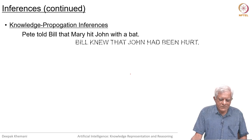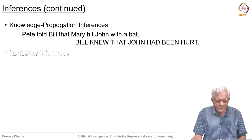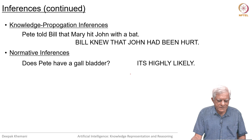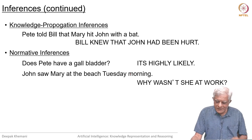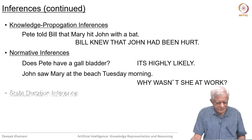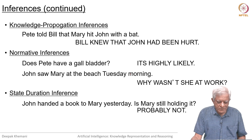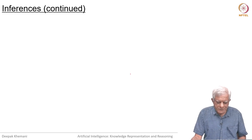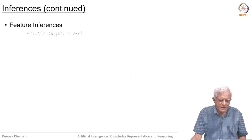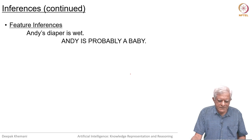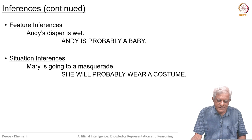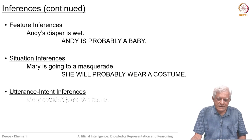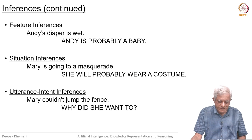Knowledge propagation: Pete told Bill that Mary hit John with a bat — Bill knew that John had been hurt. Normative inferences: Does Pete have a gall bladder? It is highly likely — that is a normal thing to happen. John saw Mary at the beach Tuesday morning — why wasn't she at work? State duration inferences: John handed a book to Mary yesterday — is Mary still holding it? Probably not. Feature inferences: Andy's diaper is wet — Andy is probably a baby. Situation inferences: Mary is going to a masquerade — she will probably wear a costume. Utterance intent inferences: Mary could not jump the fence — why did she want to?